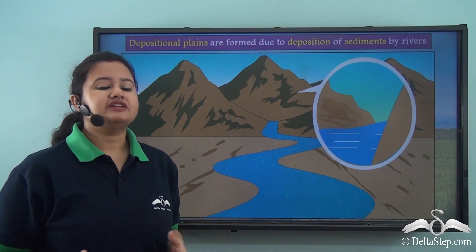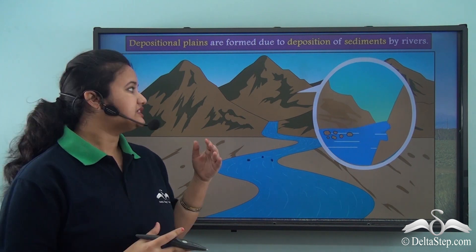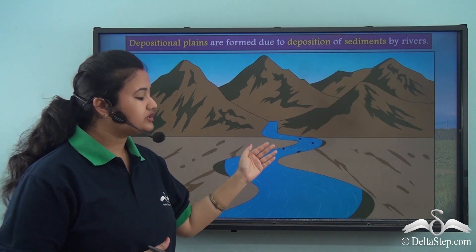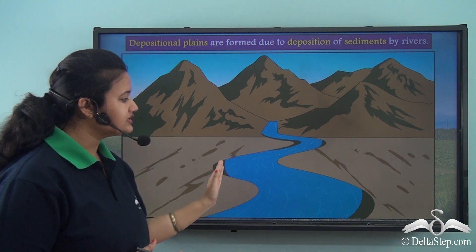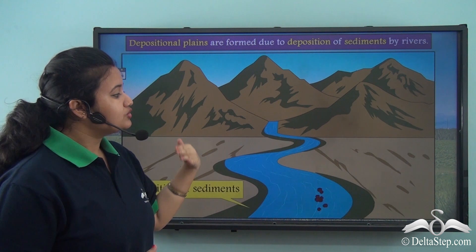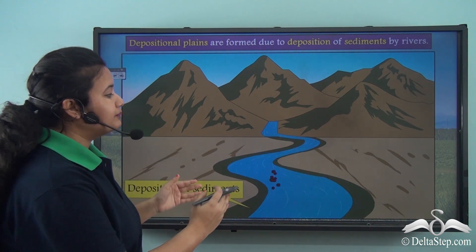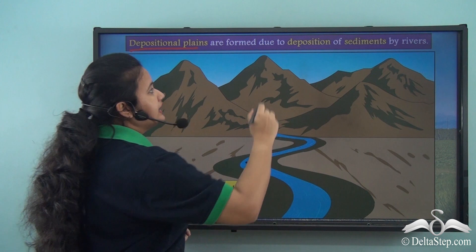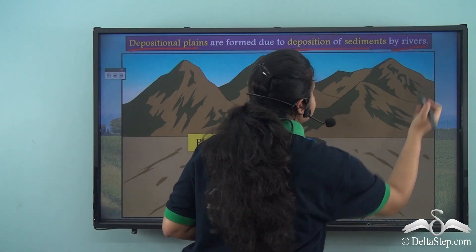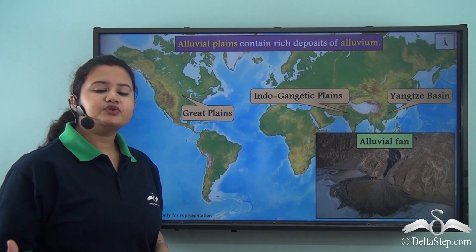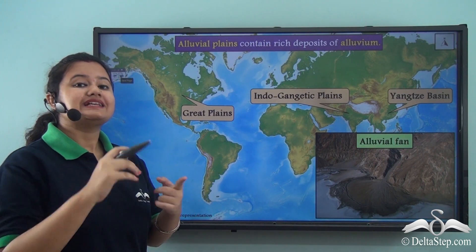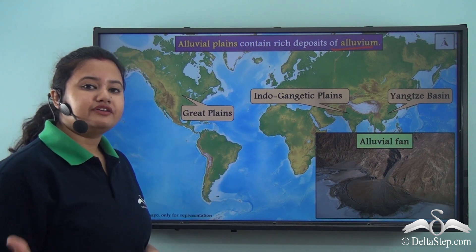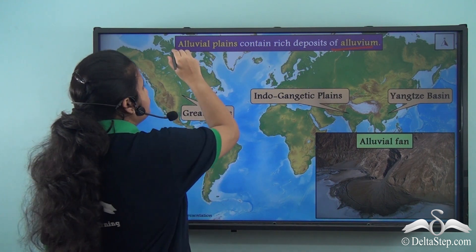The perennial rivers — Indus, Ganga, and Brahmaputra — originate in the mountains. As a river moves across a mountain, it erodes the landforms. The eroded sediments are eventually deposited along both sides of the river. Due to gradual deposition over the years, plains extend and form depositional plains. These deposited sediments are usually rich in sand, silt, and clay, together known as alluvium. Plains rich in alluvium are known as alluvial plains.